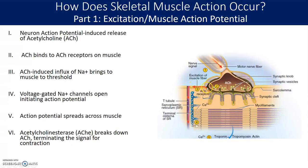The action potential — or the signaling for contraction — is terminated once the acetylcholine is gone. Acetylcholine binding to the receptors is really what's causing that action potential to be generated; it's the trigger. So you have to get acetylcholine out of the way for that signal and subsequent contraction to be terminated. The acetylcholine is removed in a couple of ways: it can diffuse out of the synaptic cleft into the interstitial fluid, or it can be broken down by acetylcholinesterase, an enzyme that breaks it down and helps the nerve ending take the acetylcholine back up.